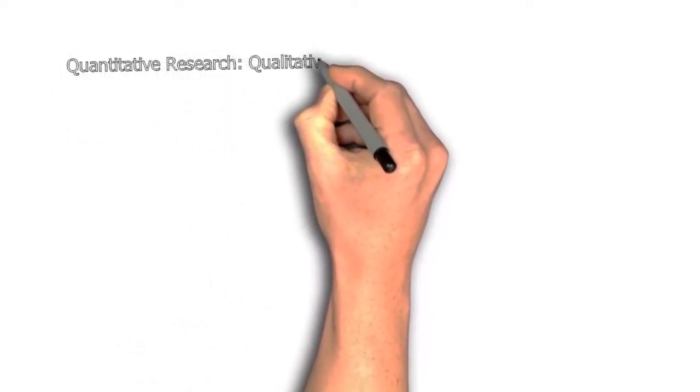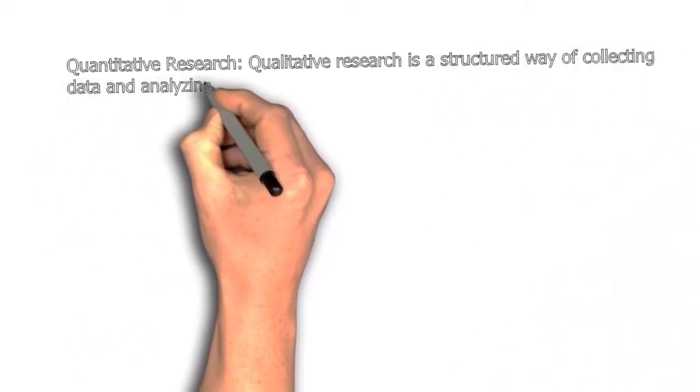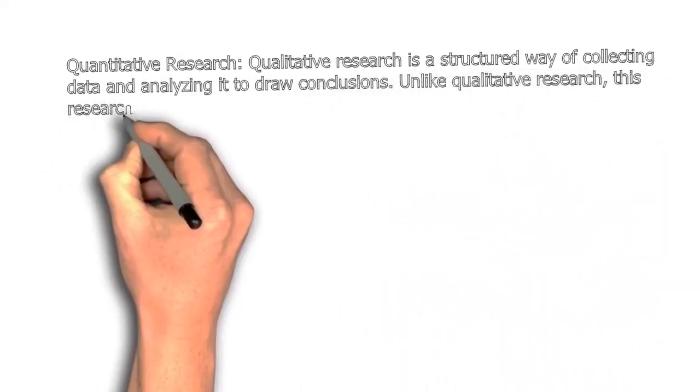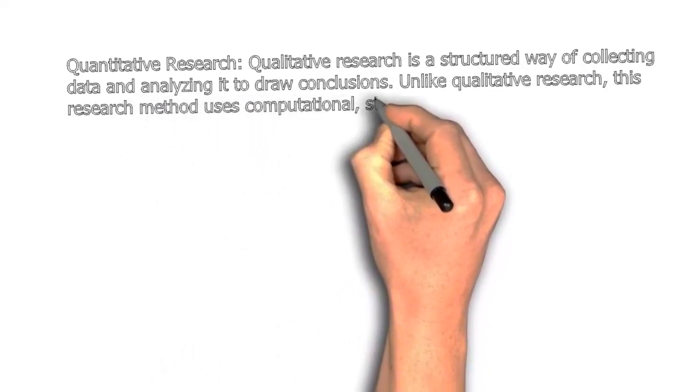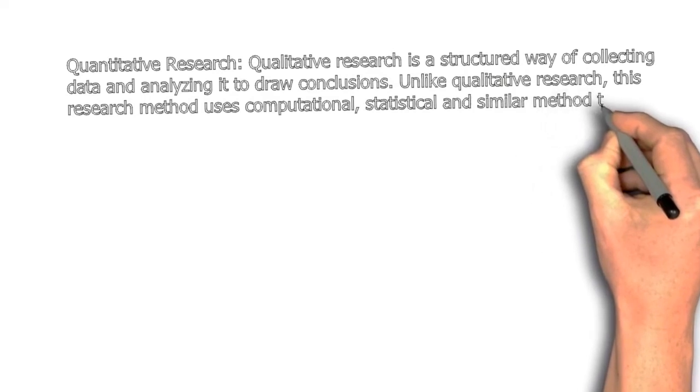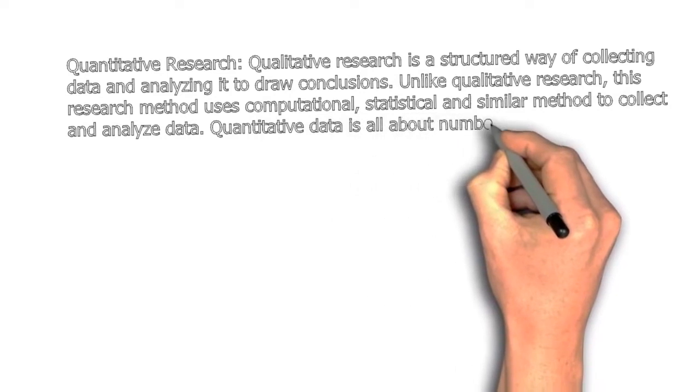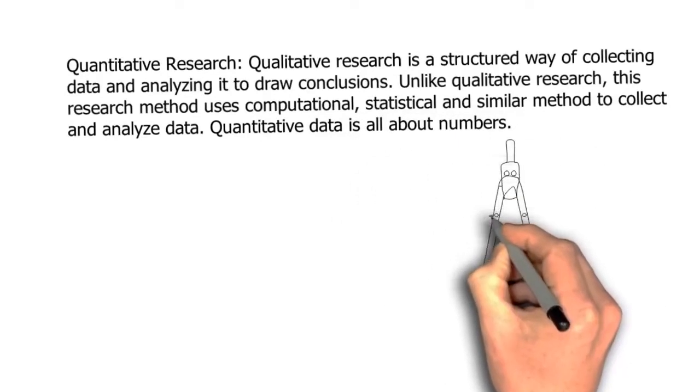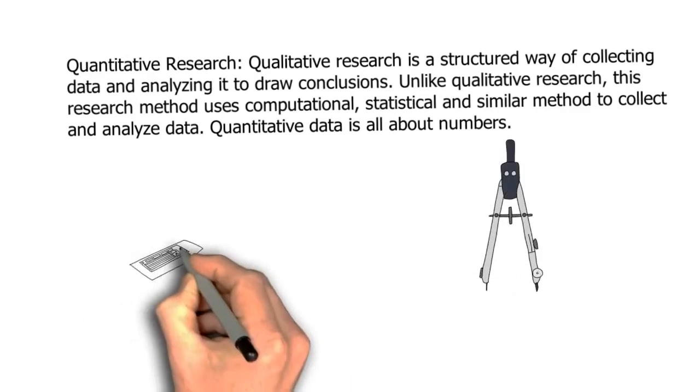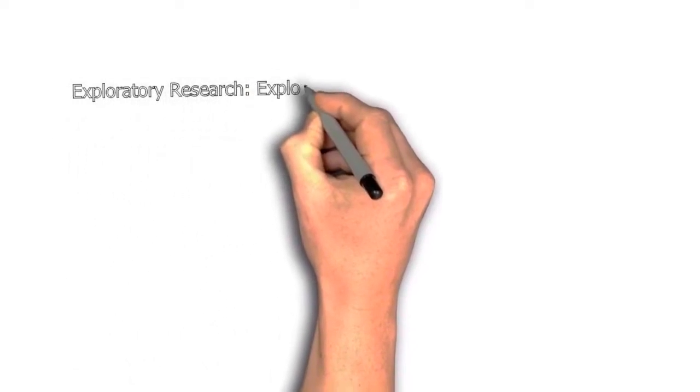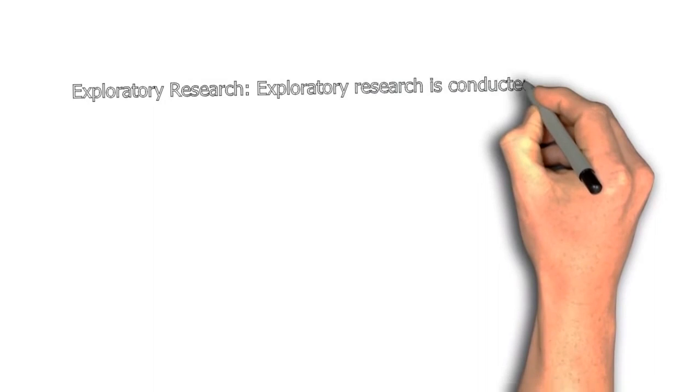Another one is quantitative research. Quantitative research is a structured way of collecting data and analyzing it to draw conclusions and inferences about any problem or issue. Unlike qualitative research, this research method uses computational, statistical, and similar methods to collect and analyze quantitative data. Quantitative data is all about numbers. This is a more scientific method of research because here we will have more proven facts and figures that will support our logical reasoning.